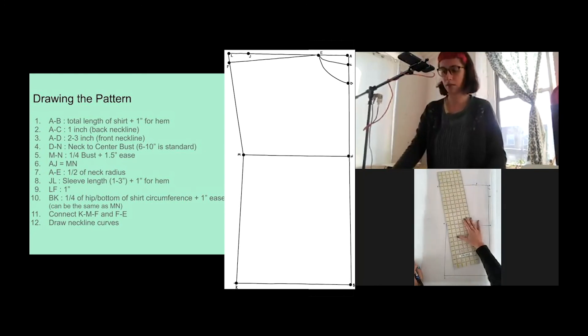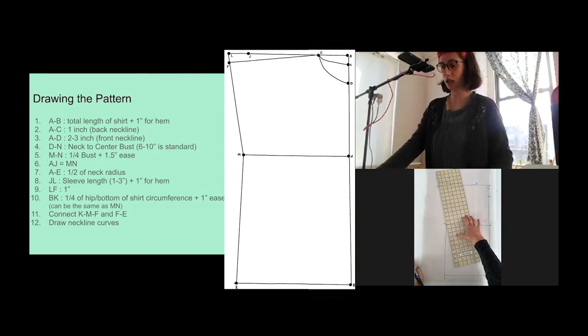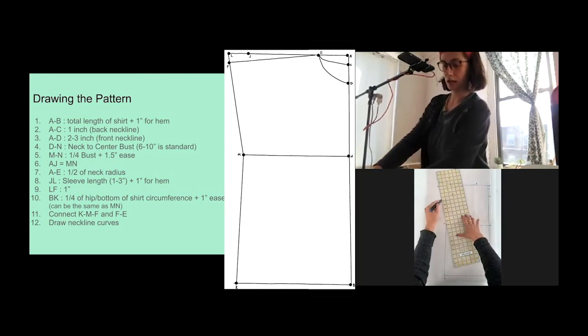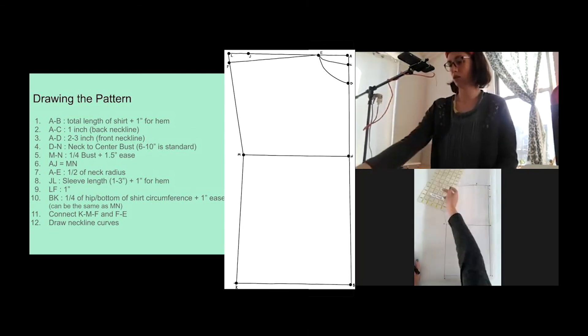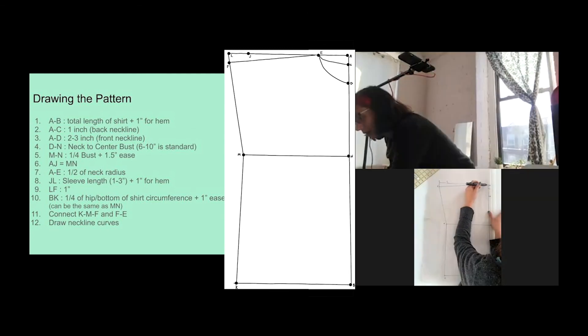And then from M to F, which depending on what your measurements are, it could be a straight line. Mine angles out just slightly. And then we're going to draw the neckline curves. First, I'm going to connect C to E. Like so. And then I'll connect D to E.